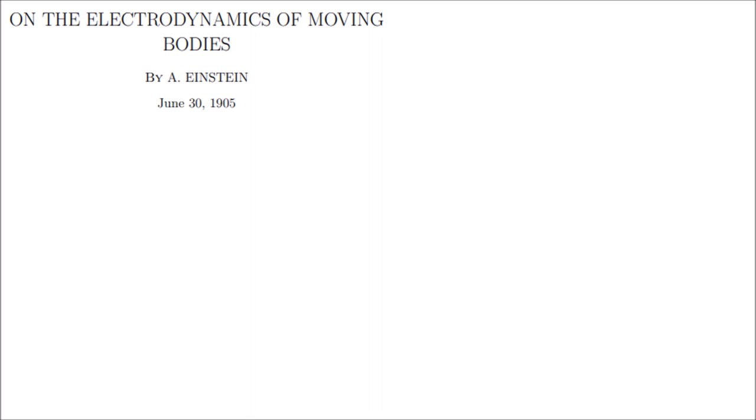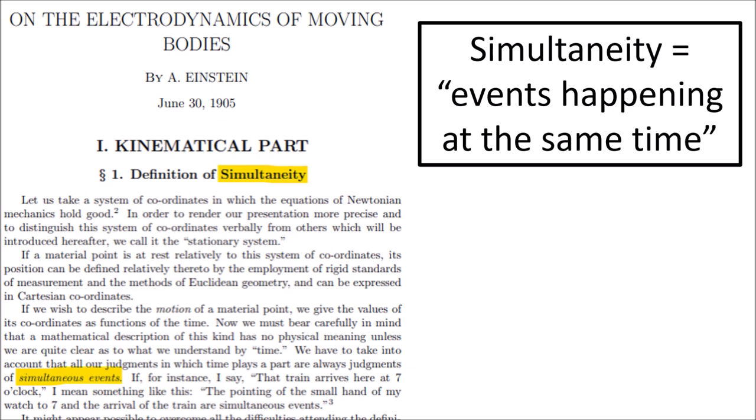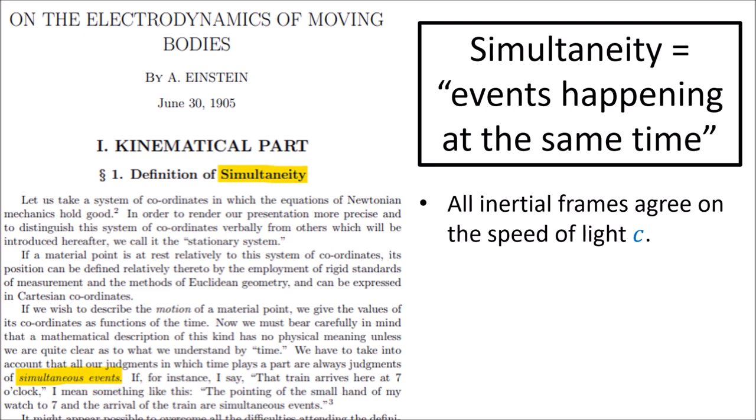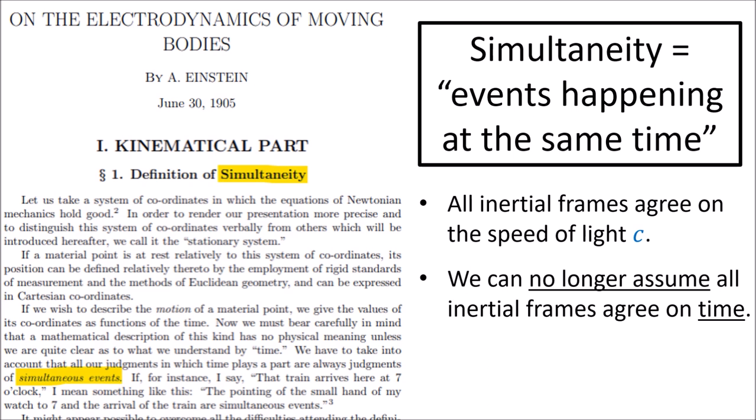The first thing that Einstein did in this paper was to define the concept of simultaneity — just a fancy way of saying when two events happen at the same time. Einstein argued that when we assume the speed of light is constant for all inertial frames, observers can no longer take for granted a universal definition of time for all reference frames, as they do in Galilean relativity. So Einstein decided that he needed to use light to define what it would mean for two events to happen at the same time, because the speed of light is agreed upon by all inertial reference frames.